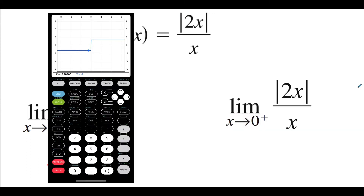Then let's also talk about the limit from the right-hand side — x approaching 0 from the right. If I trace in from the right-hand side, just because of how this function is written, the y value is always 2. So the right-hand limit is positive 2.